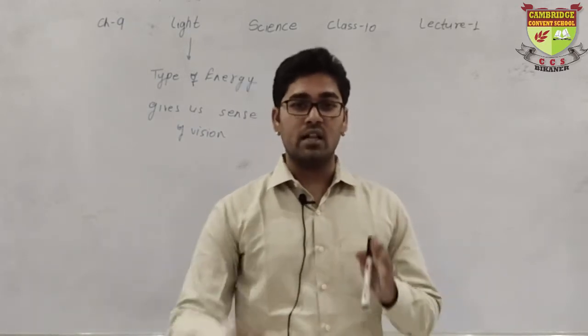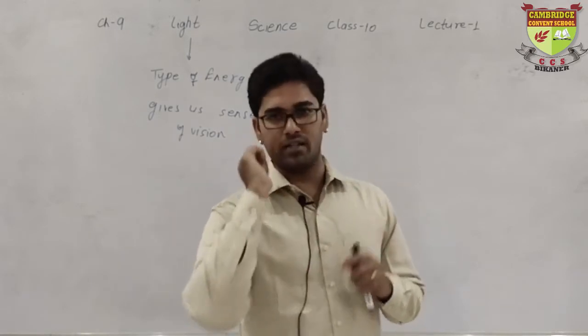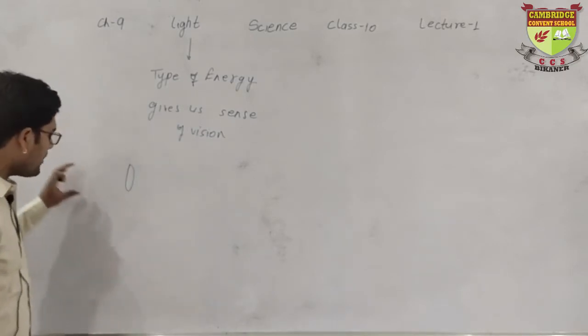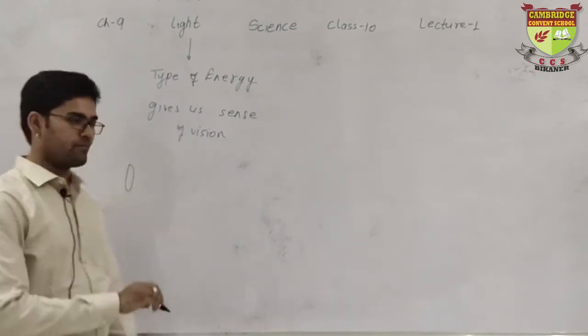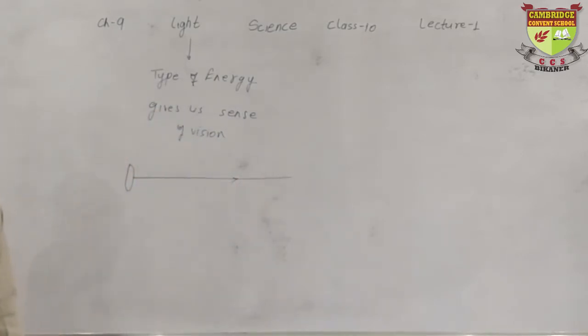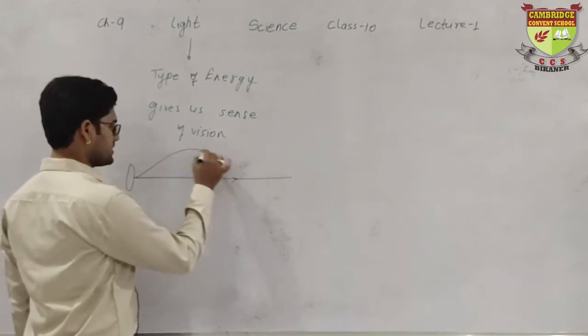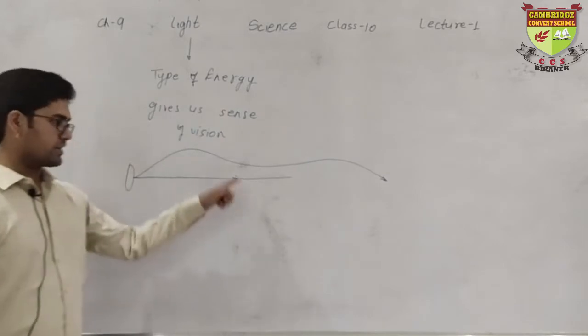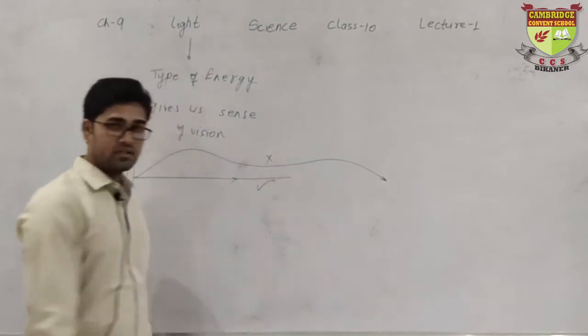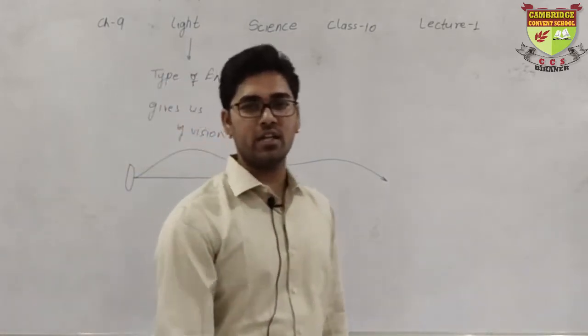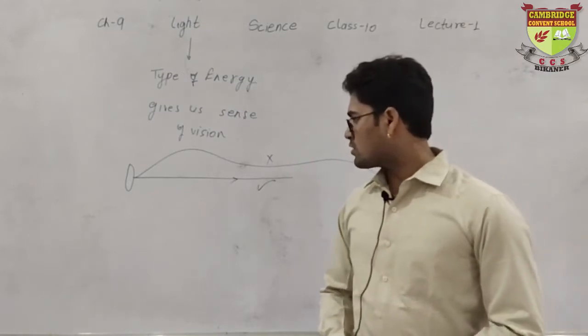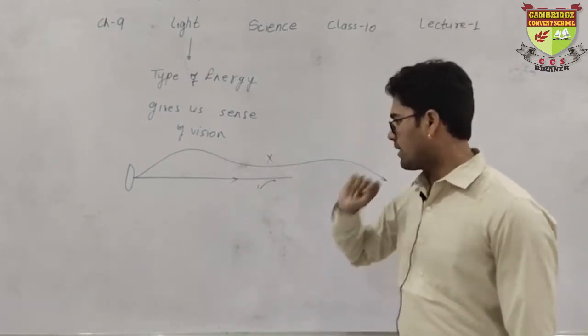So what is the first property of light? The first property of light is light always travels in the straight path. Suppose this is a source of light. So many rays are coming from here, but I am just studying one ray. Light will always move in the straight path.